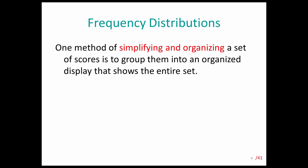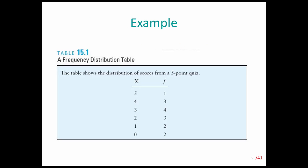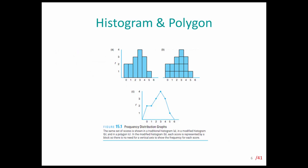One of the basic statistics we use to describe a sample is frequency distribution. Frequency distribution is simply the frequency of any given score in a sample. For example, the first column shows the scores and the second column shows the frequency of that score. In this case, we have one student who got 5, three students who got 4, and four students who got 3 on this test.